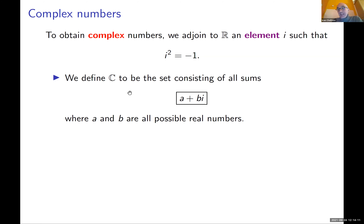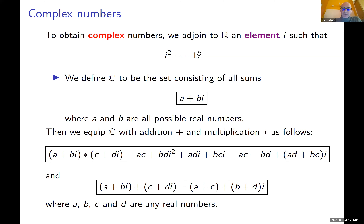You equip this set with addition by adding real parts and imaginary parts separately. You also equip it with multiplication using the rule i² = −1 and the usual rules of multiplication — you just expand the brackets in the usual way and simplify using i² = −1. This gives the standard multiplication formula for complex numbers.